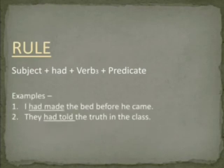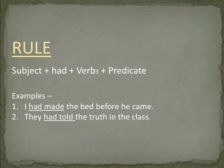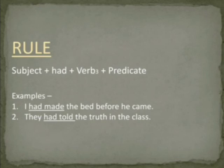Let us see some examples. First: I had made the bed before he came. In this sentence, 'I' is the subject, 'had' is added after the subject, 'made' is the third form of the word 'make', and 'the bed before he came' is the predicate. Second: They had told the truth in the class. 'They' is the subject, 'had' is added after the subject, 'told' is the third form of the word 'tell', and 'the truth in the class' is the predicate.